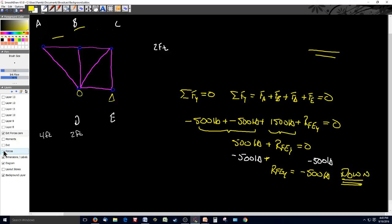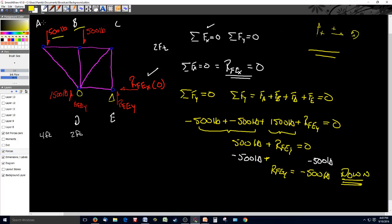So let's go back into my force diagram here and I'm going to correct that. I'm going to erase the head of that arrow and I'm going to fix it. I'm going to make it go down. And I can also put in here that it is 500 pounds down.